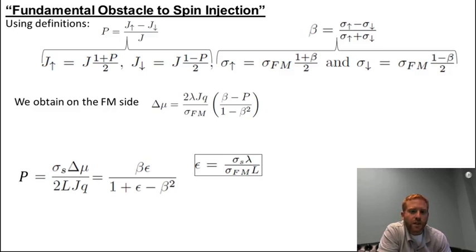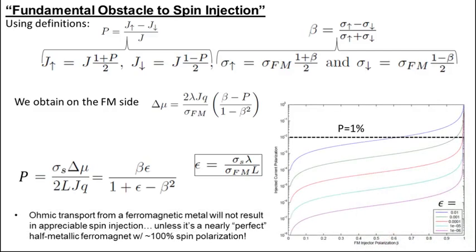Unfortunately, the bulk polarization of typical ferromagnets is around 50%, so as this plot shows, ohmic injection is doomed unless epsilon is at least 0.01.